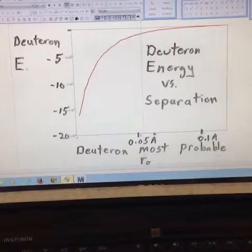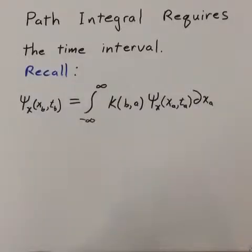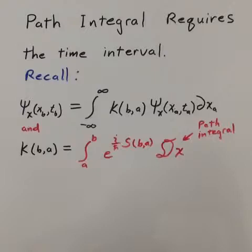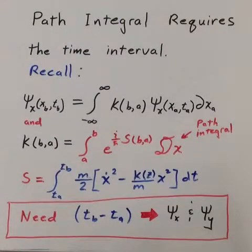Recall that from the path integral equation we need a time interval for the integration of the Lagrangian over time. Since we are trying to describe the electron over a complete deuteron orbit, the deuteron orbiting time is required.